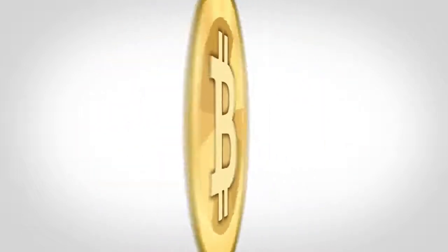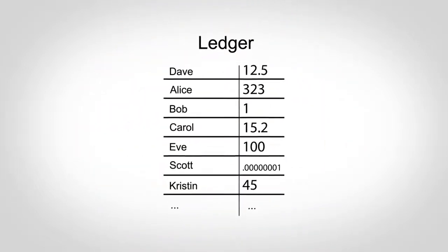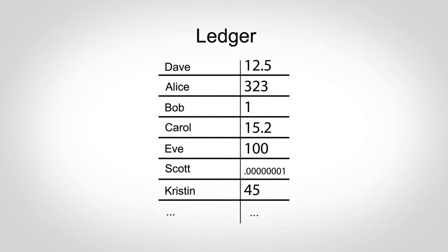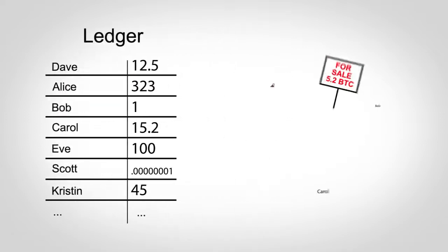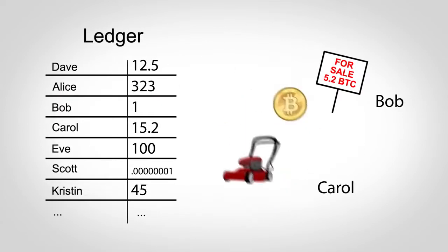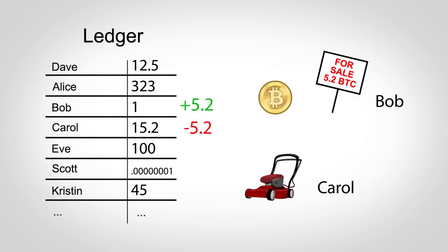At a very basic level, Bitcoin is just a digital file or ledger that contains names and balances, and people exchange money by changing this file. When Bob sells Carol a lawnmower for 5.2 Bitcoins, Bob's balance goes up by 5.2 and Carol's down by 5.2.